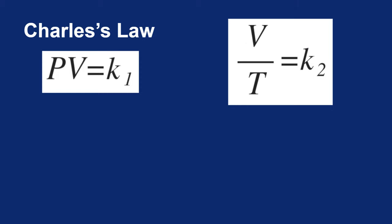We have also talked about Charles' law, where volume and temperature are directly proportional, so V over T is a constant.